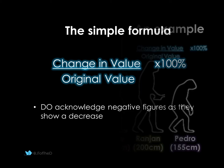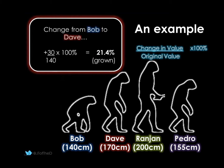So let's put this into action. Here's a very simple evolutionary table looking at how people's heights may have changed. Bob is 140 cm, Dave 170. Ranjan is exactly 2 m, and Pedro — an old man — has actually shrunk back down to 155 cm. The formulas are on the top right there in blue.